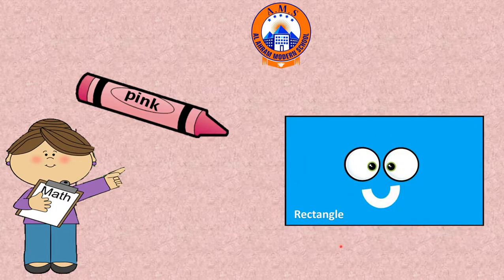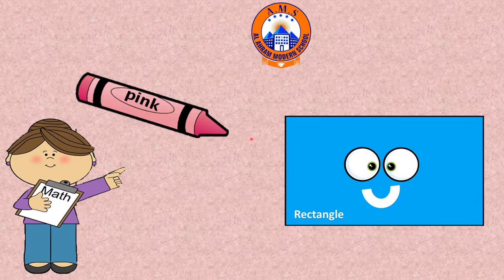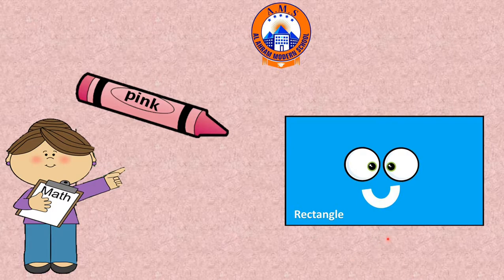What shape is it? It's a rectangle. Rectangle. What is the color of this rectangle? Blue. What is this shape? Rectangle. Pink. Rectangle. Pink.